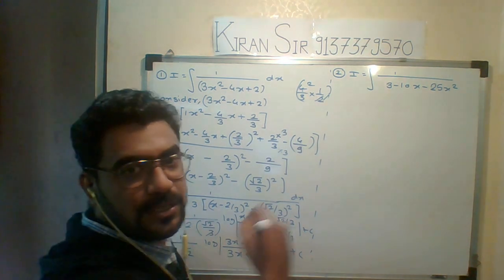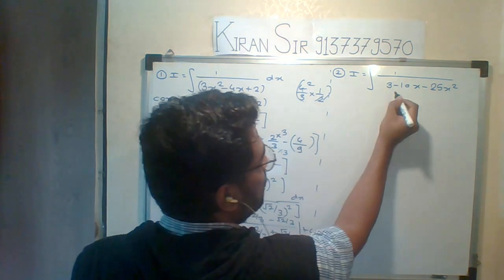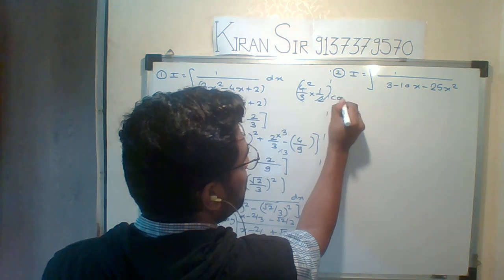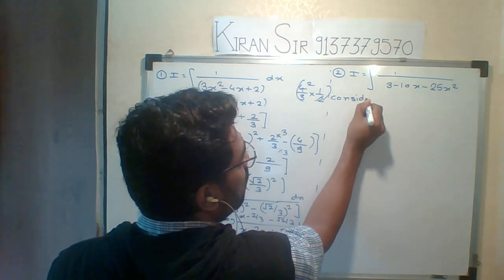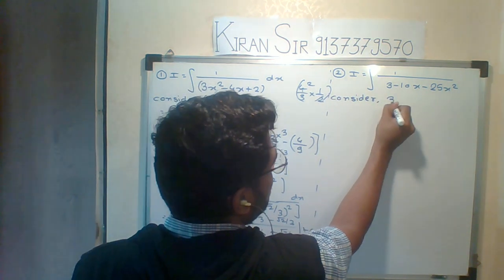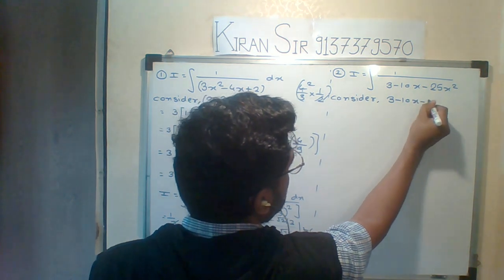Let us start the next sum. The next sum is, again the quadratic equation we observe here. So what I will do, whenever you observe, the quadratic equation is 3 - 10x - 25x².